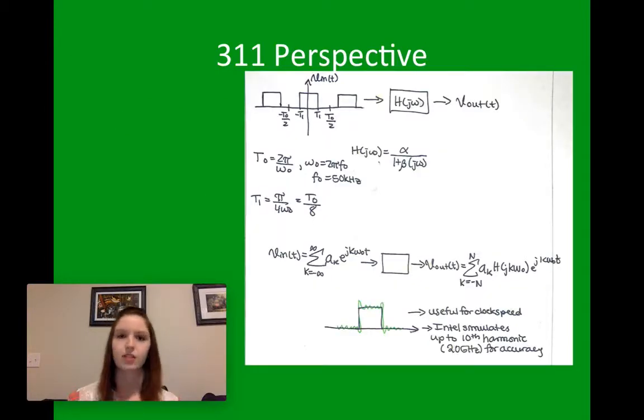So, now from a 311 perspective, continuing the 311 perspective, we're going to look at the square wave, which is very important for electrical engineering. You can see that our Vin(t) is a square wave, and we get a transfer function H(jωt) in the system to get Vout. So, looking at this, you can say that our Vin(t) is a summation over negative infinity to infinity of a(k), which is our Fourier coefficient, times e to the j k omega t.